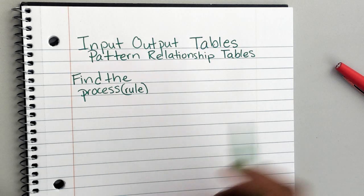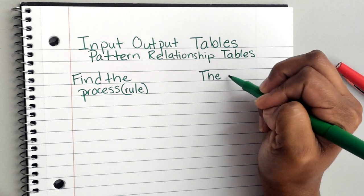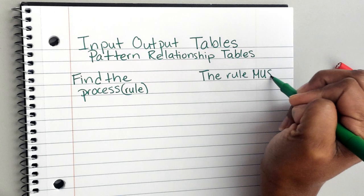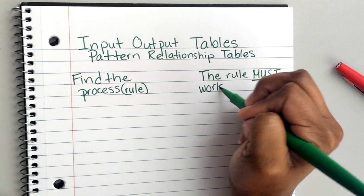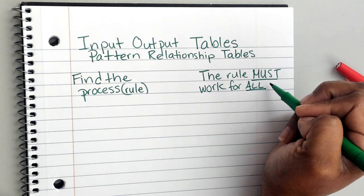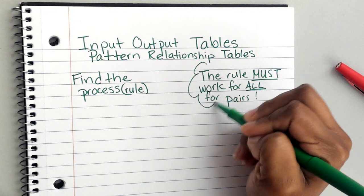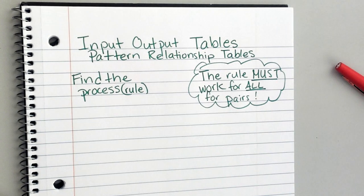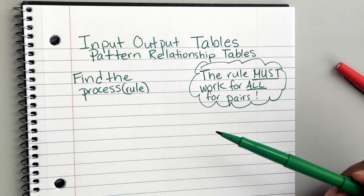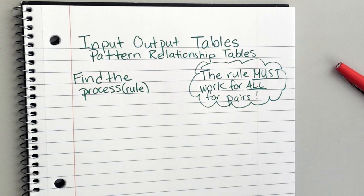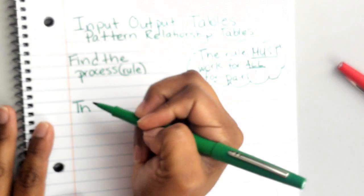Make a space on this side — this is very important. The rule MUST work for ALL pairs. Capitalize and underline that, then put a cloud around it because that means it's really important. If you find the rule, you have to make sure the rule works for everything. You can't just check the first one — you've got to check all the way to the very end.